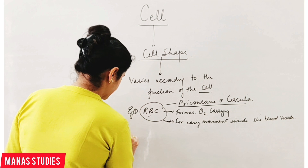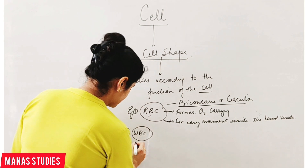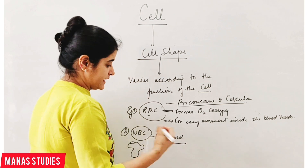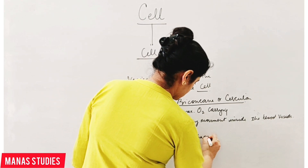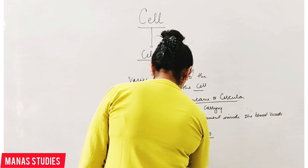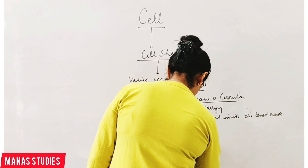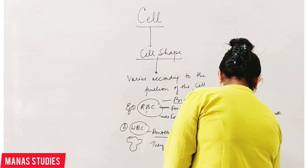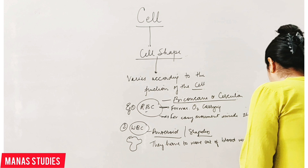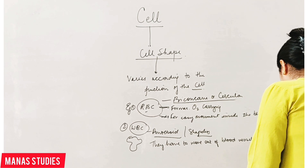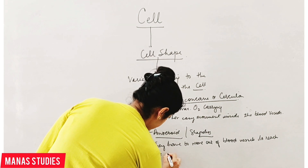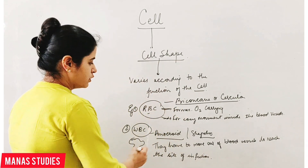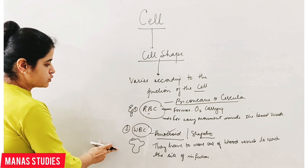Second example: WBCs. WBCs are amoeboid in shape because they are shapeless — they have to move out of blood vessels to reach the site of infection. So their shape is amoeboid. These are two different types of cells whose shape depends upon the function they perform.